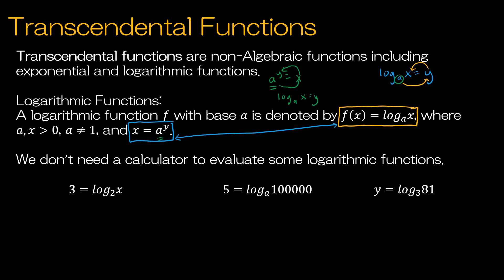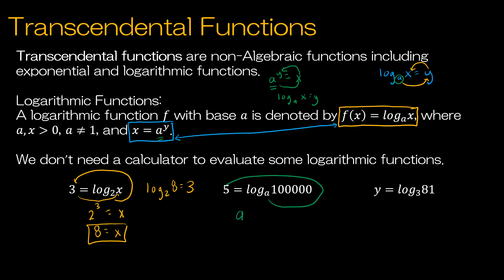Let's take a look at the three questions, using exactly what we talked about — turning the logarithmic function into an exponential function and then simplifying. For instance, we have 3 = log base 2 of x, so I rewrite it as 2 to the third power equals x. Two to the third is 2 × 2 × 2 = 8, so log base 2 of 8 is equal to 3. For the next question, swirling gives a to the fifth power equals 100,000, so taking the fifth root of each side tells us a = 10.